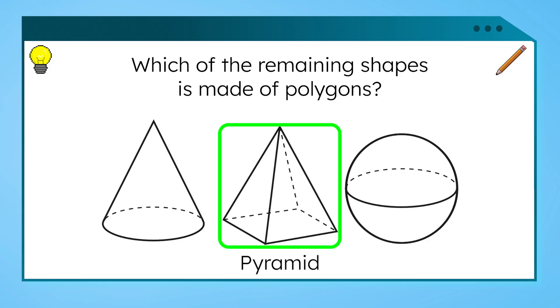This shape is called a pyramid. We figured out that any 3D shape made out of polygons would have faces, edges, and vertices. That means the pyramid couldn't be the answer to the math quest since it is made of triangles and a square.